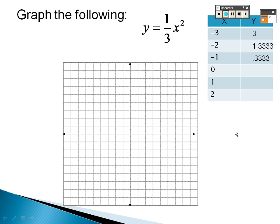Plugging in 0, you get 0 because anything times zero is zero. Plugging in 1: 1 squared is 1, times one-third is 0.333. Plugging in 2: 2 squared is 4, divided by 3 is 1.333.